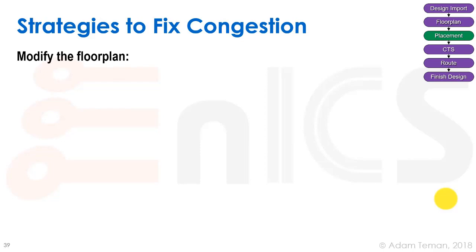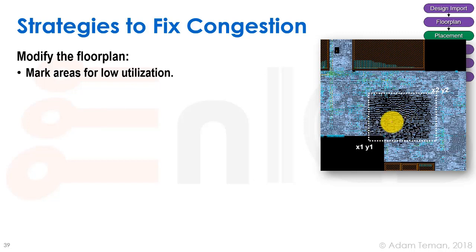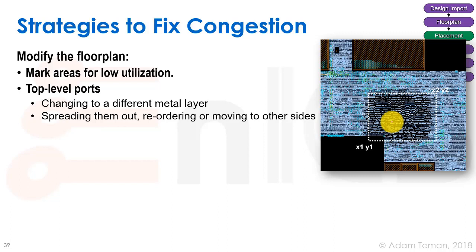To fix congestion, the main strategy is to go back to the floorplan and modify it. One approach is to mark a routing hotspot area as a partial blockage with low utilization — less routing there may solve the problem. Ports are also very important: in pad placements or hierarchical designs, we can change port layers, spread them out, reorder them, or move them to different sides and closer to the relevant macros.